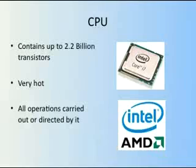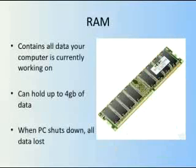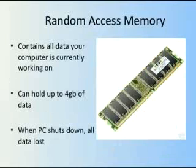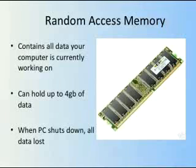Up to 2.2 billion instructions a second can be processed. So, next comes RAM. This isn't an animal in a field with horns — it's random access memory. And this will contain all the data that your computer is currently working on. The more RAM you have, the more things your computer can do at once. At the moment, you can buy these chips in the picture, known as DIMMs, that hold up to 4GB of data. But the general rule, or Moore's Law, is that this amount will double every two years. So within the next two years, expect to see 8GB on one DIMM.